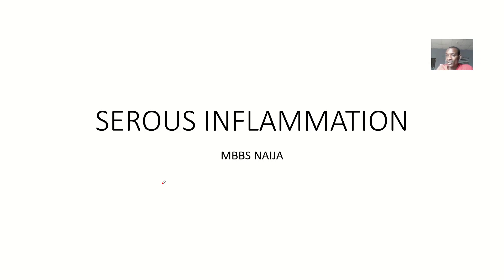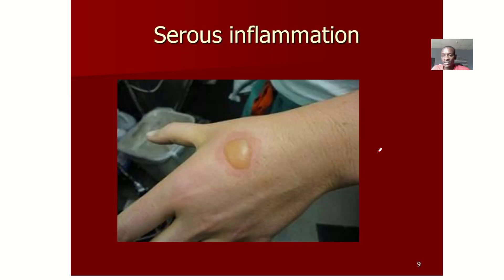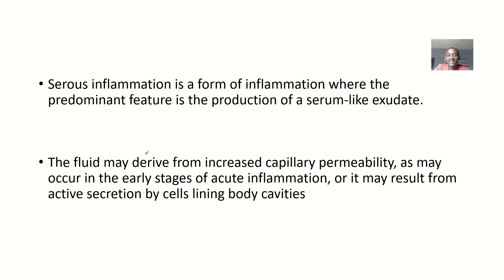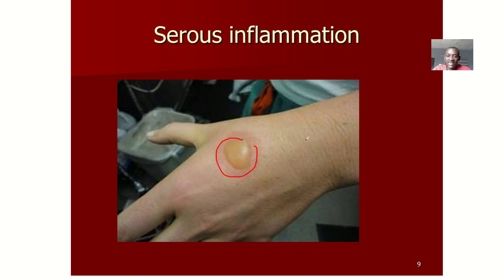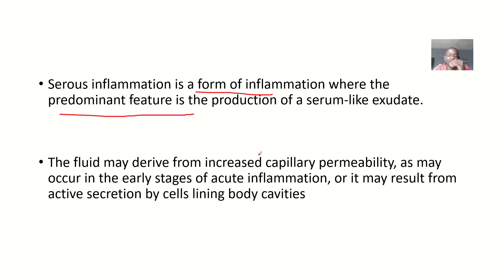Another type of inflammation that could result from acute inflammation is what we call the serous type of inflammation. Serous inflammation is a form of inflammation where the predominant feature is the production of a serum-like exudate. The fluid is thin and like a serum, which is why they call it serous.